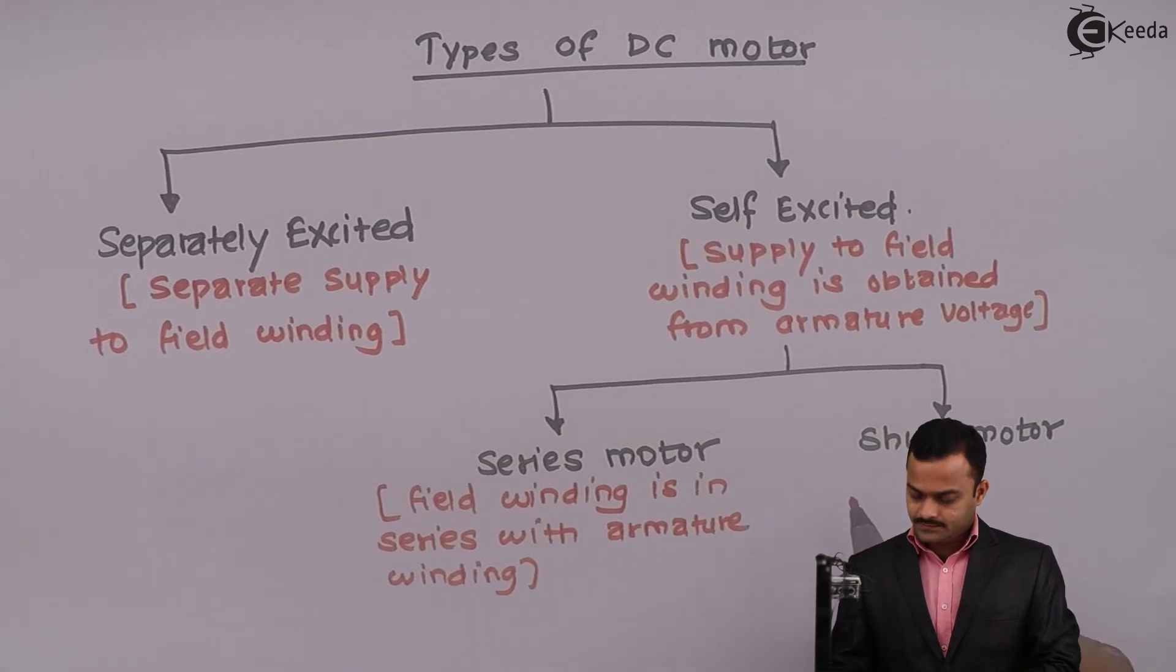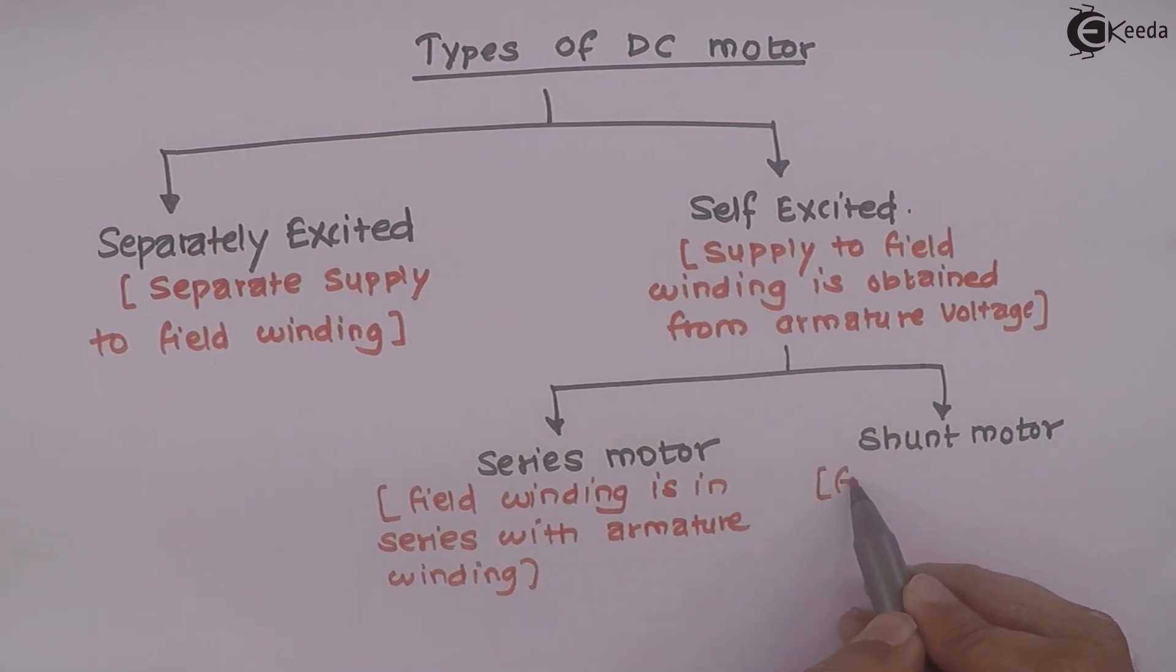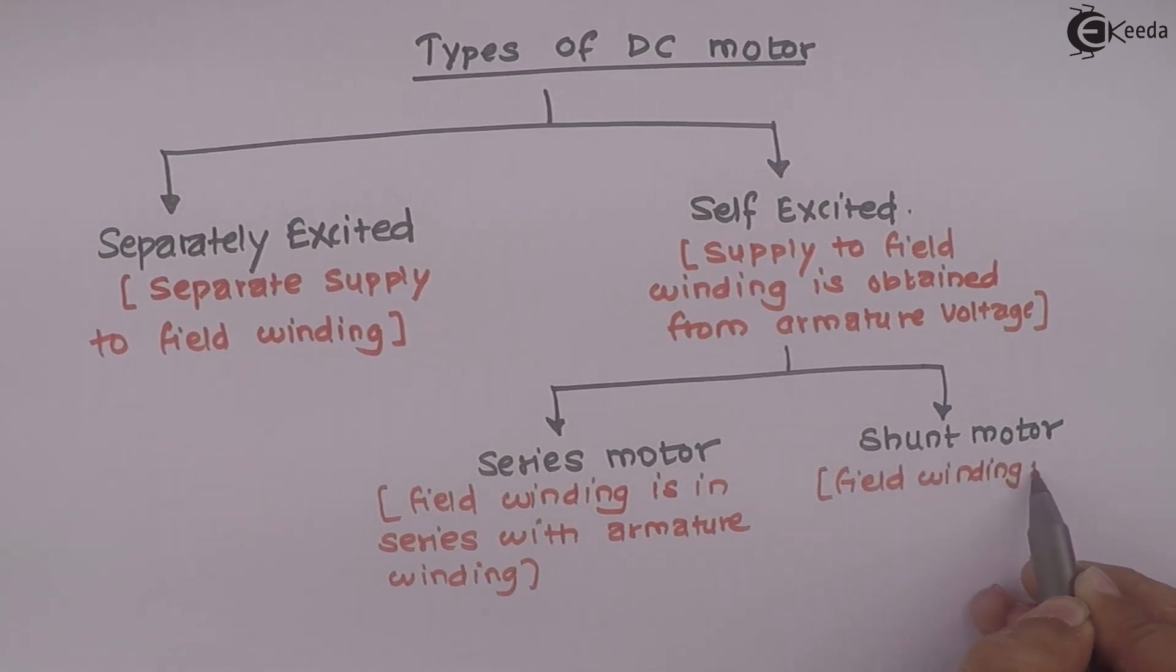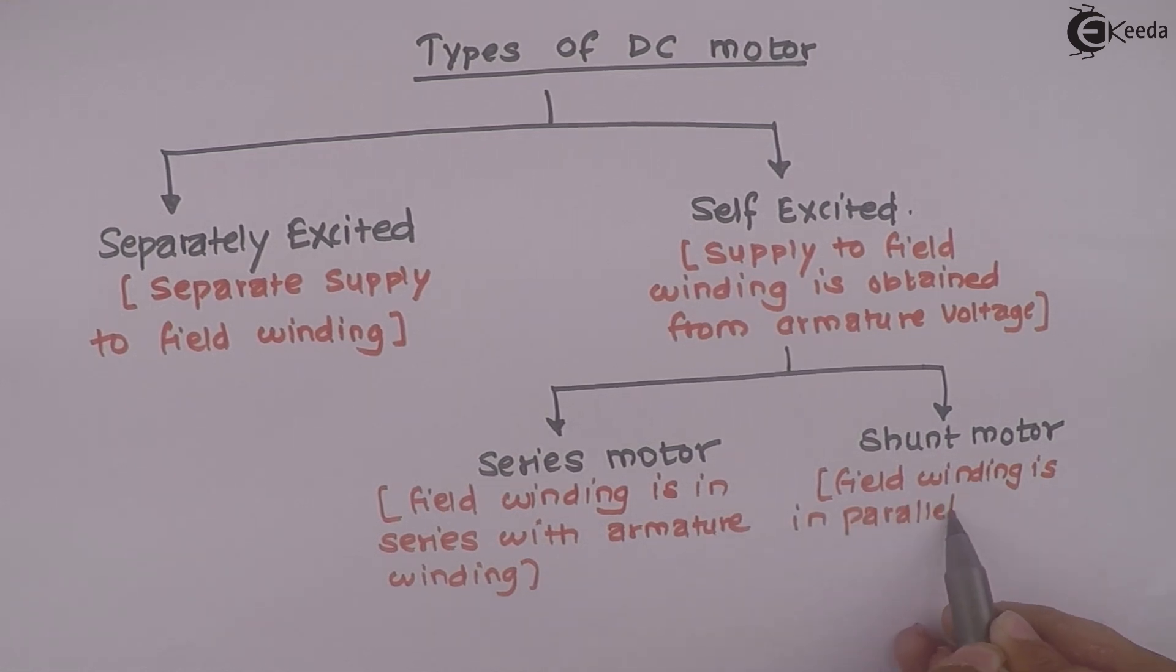Whereas in shunt motor, field winding is connected in parallel with armature winding.